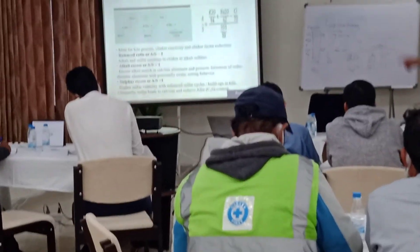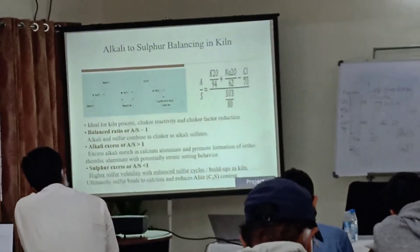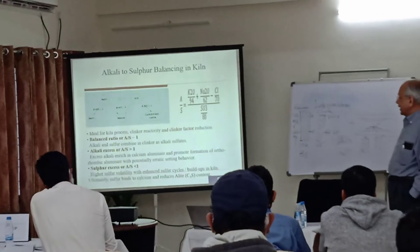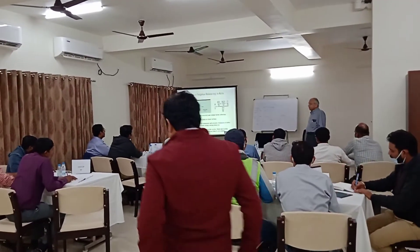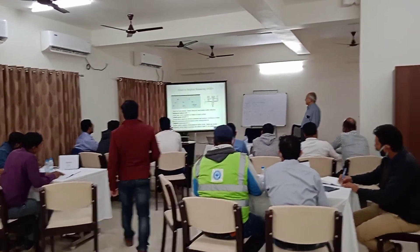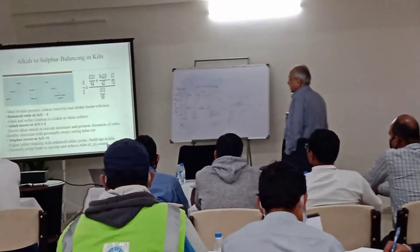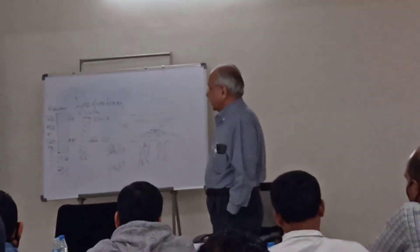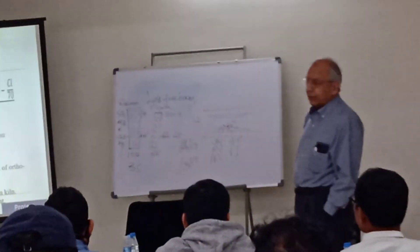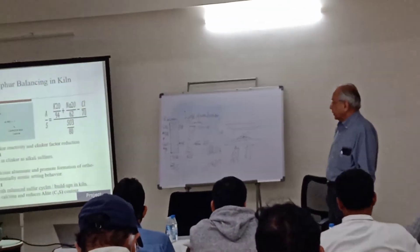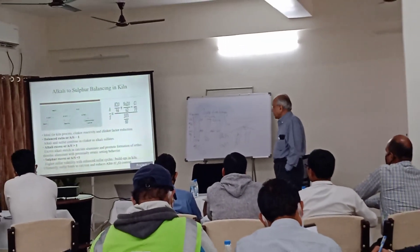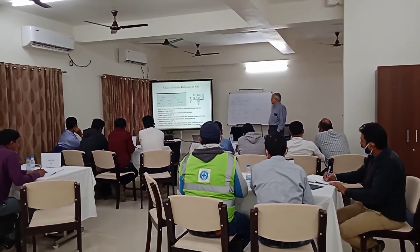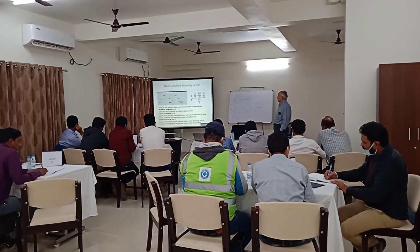This is ideal for kiln process, clinker reactivity, and clinker factor production. A balance ratio of A equal to 1 — alkali and sulfate combine in clinker as alkali sulfates. When alkali excess, or A is more than 1, excess alkali enriches in calcium aluminate and promotes formation of tricalcium aluminate with potentially erratic setting behaviour.